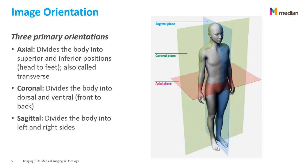Images can be viewed in different orientations: axial, coronal, and sagittal. Axial divides the body into superior and inferior positions, such as head and feet, and is also called the transverse plane. Coronal divides the body into dorsal and ventral, so front to back. And sagittal divides the body into left and right sides.